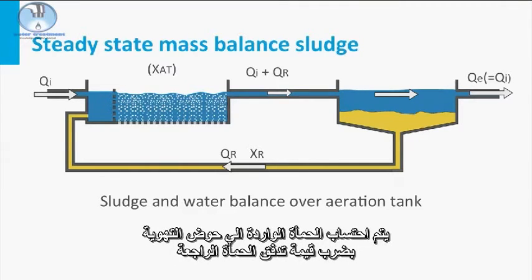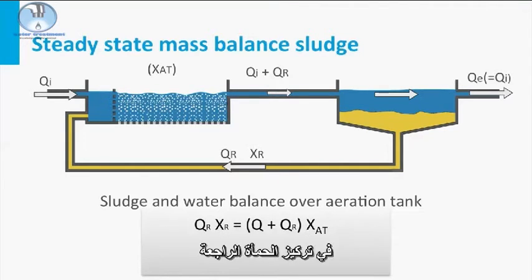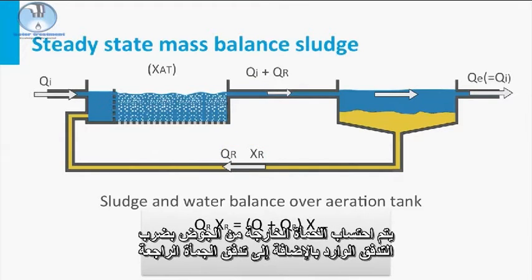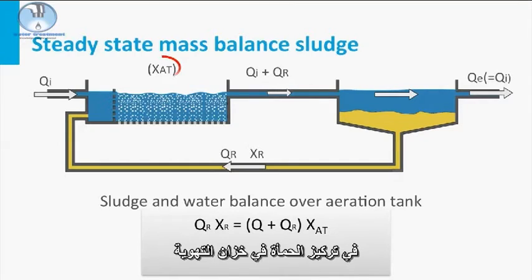Sludge entering the aeration tank is calculated by multiplying the return sludge flow times the return sludge concentration. Sludge leaving this tank is calculated by the influent flow plus the recycled flow times the sludge concentration in the aeration tank.